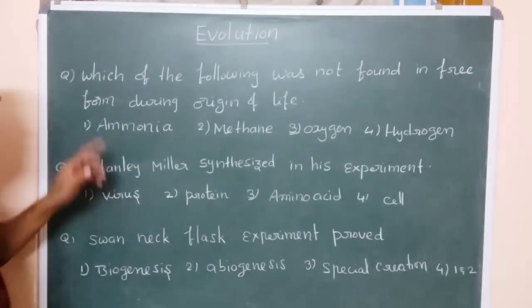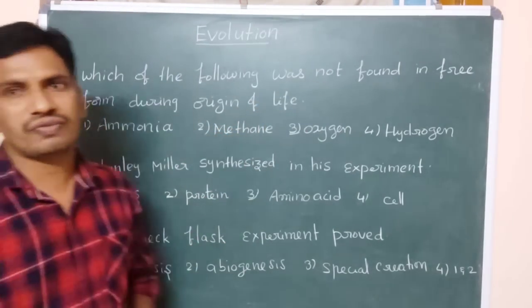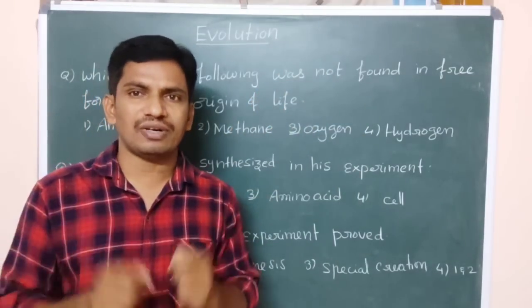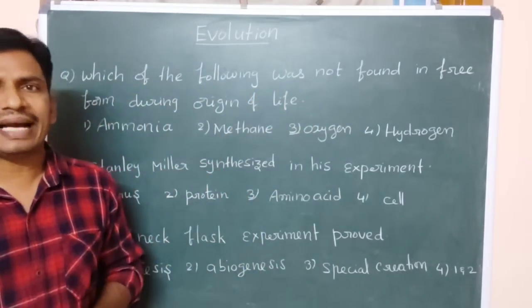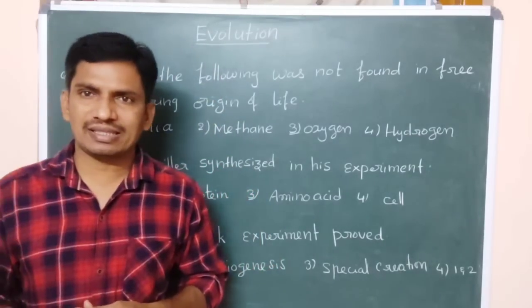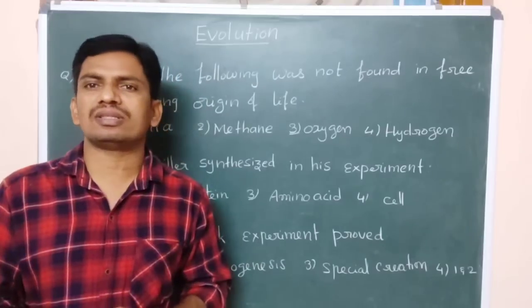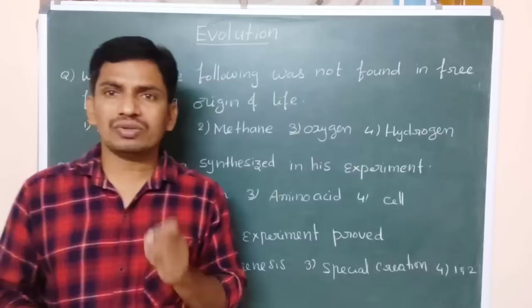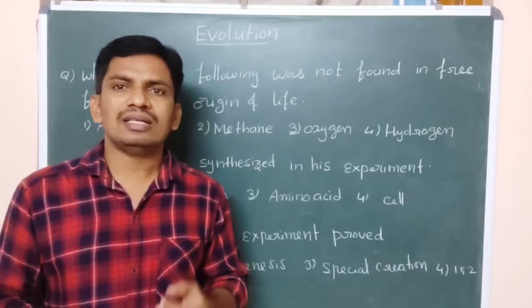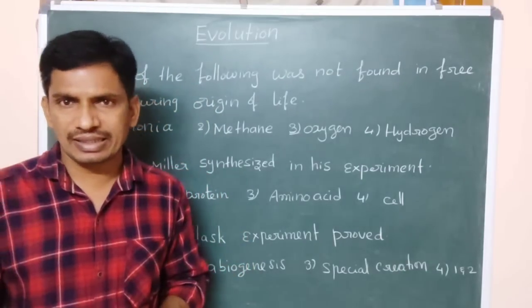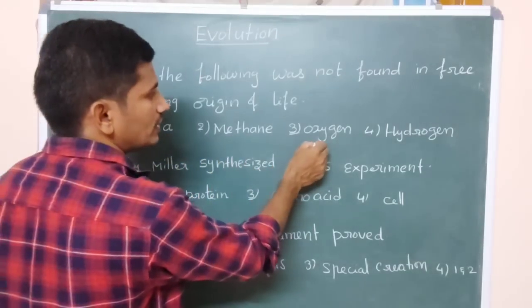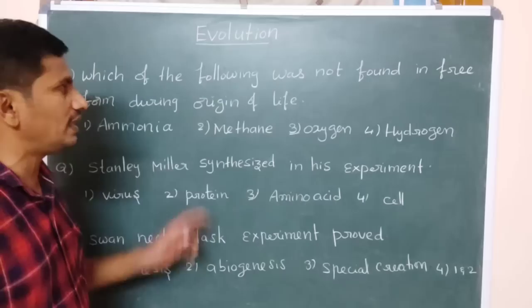See here, first objective is: which of the following was not found in free form during the origin of life? So here you know that according to Big Bang theory, that massive explosion takes place in that, only different parts they formed as different planets. So here being time course they gradually cool down, temperature decrease and they condensed.